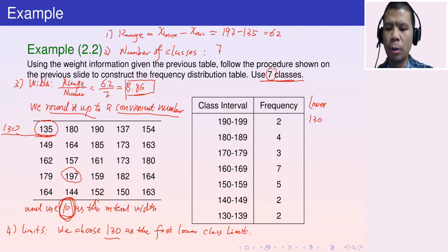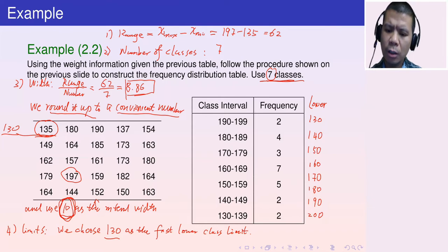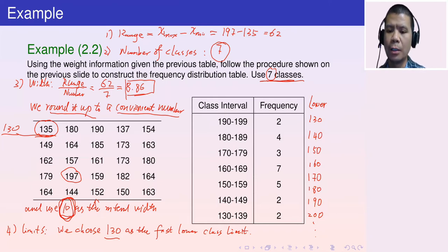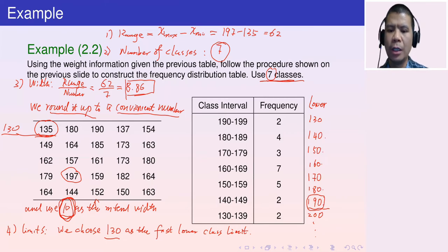With 130 as the first lower class limit and an interval width of 10, the subsequent lower class limits are 140, 150, 160, 170, 180, and 190. Since we need exactly seven classes, we stop at 190 — that gives us seven lower class limits: 130, 140, 150, 160, 170, 180, 190.